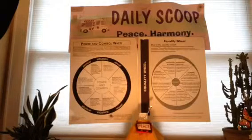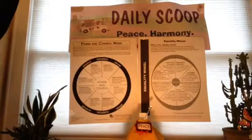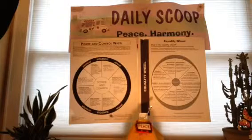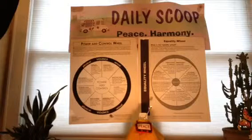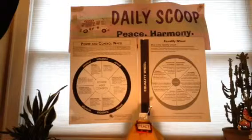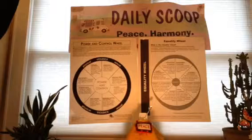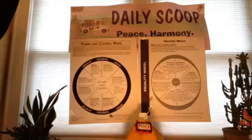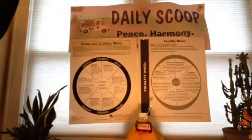Today we are going to get back to basics. What you're seeing on your screen is something called a power and control wheel — that's on my left — and on my right is the equality wheel. We're going to talk about the power and control wheel and the equality wheel, which is really the core — or the misuse of power and control, as my friend Jack would put it — the root of domestic violence in terms of trying to define it or show you what it looks like.